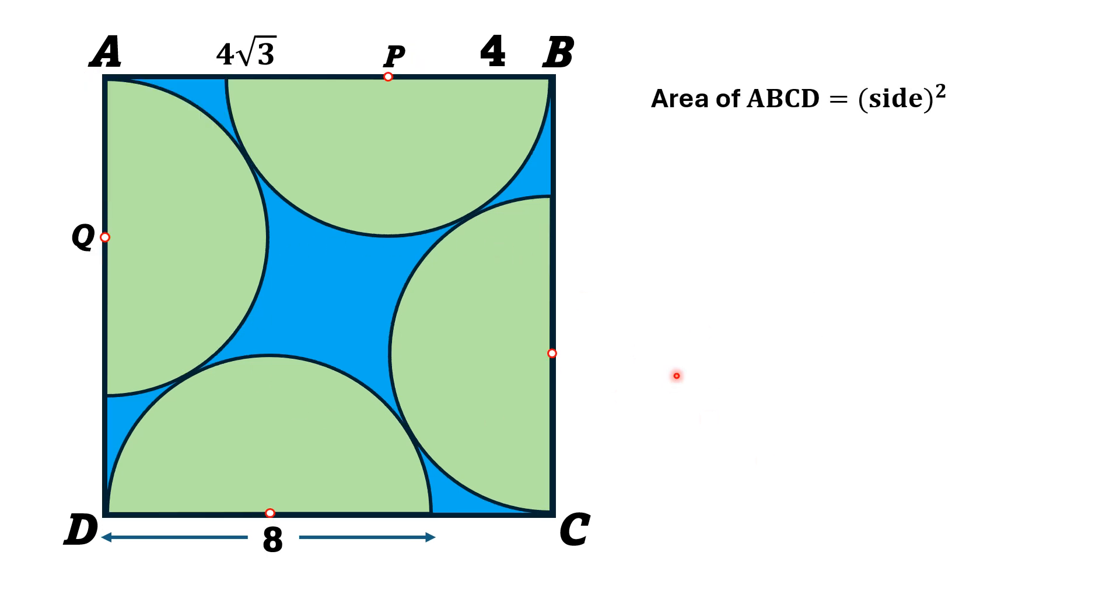Now, area of square ABCD is equal to its side square and its side length is equal to 4 times 1 plus square root of 3. So, that is equal to square of the side and from here we have area of this square is equal to 16 times 1 plus square root of 3 square which is equal to 119.4256 square units.